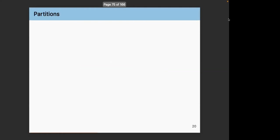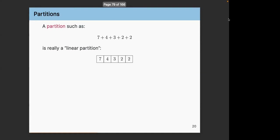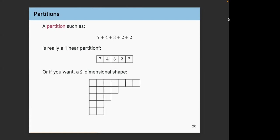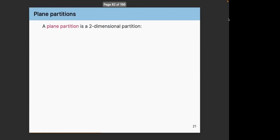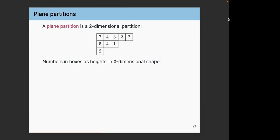What are cylindric partitions? First, what are partitions? A partition is just a way to write a number as non-negative integers in decreasing order. You can think of it as a linear partition — boxes with numbers — or as a two-dimensional shape. A plane partition is a two-dimensional array of boxes, weakly decreasing in rows and columns, or equivalently a three-dimensional shape made by stacking boxes. It looks 3D but is called a plane partition for historical reasons.